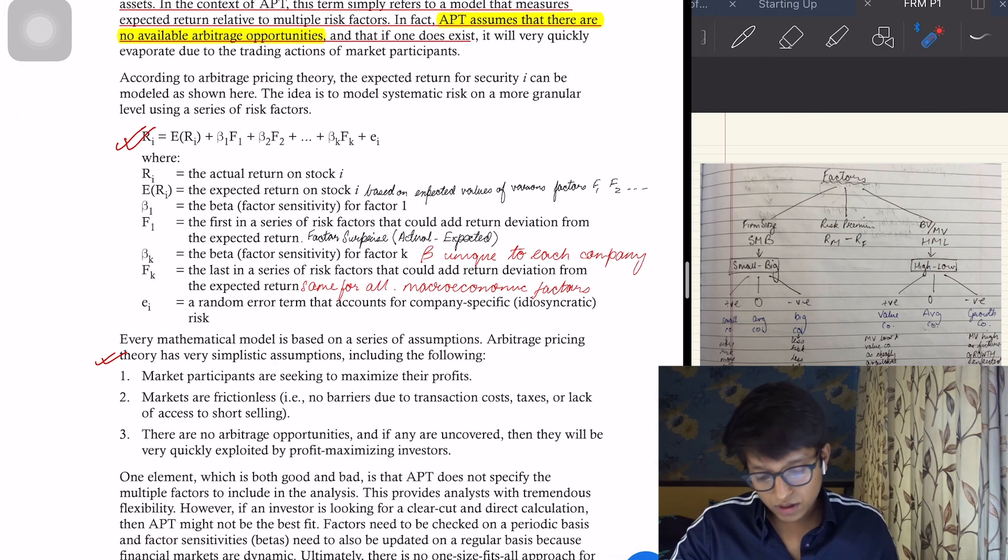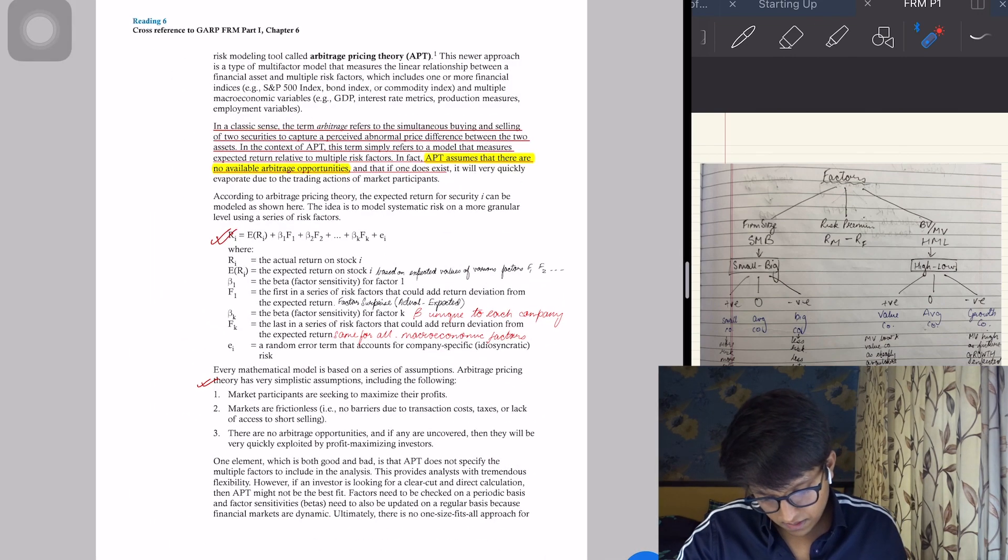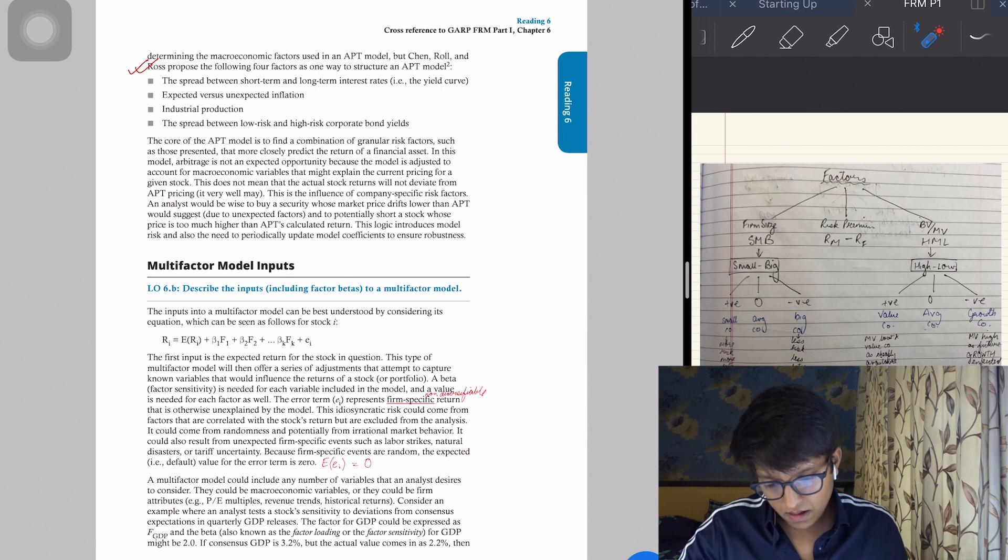The three simplistic assumptions: market participants are seeking to maximize their returns, obviously; markets are frictionless, that is efficient markets, no taxes, no transaction cost; and there are no arbitrage opportunities available. It's called Arbitrage Pricing Theory, but there are no arbitrage opportunities available.